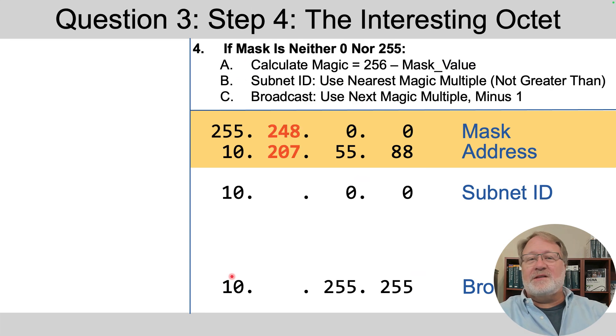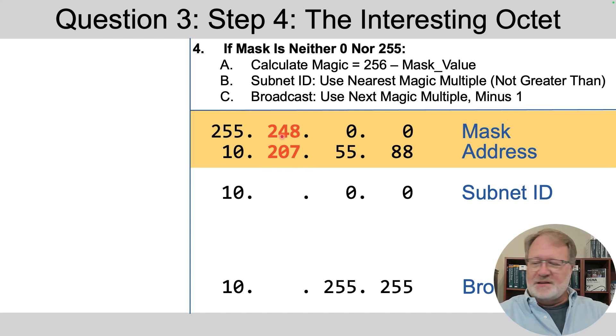So then we get to step four, which is where we deal with that interesting octet where the mask is neither a zero nor a 255. In this case, it's 248 again. So what do we do then? Calculate the magic number. Look at the multiples of the magic number and find the one that's closest to 207 without going over. Let's take a look.